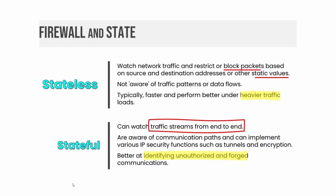Stateless firewalls watch network traffic and restrict or block packets based on source and destination addresses or other static values. They are not aware of traffic patterns or data flows, but typically are faster and perform better under heavier traffic loads. Stateful firewalls can watch traffic streams from end to end. They are aware of communication paths and can implement various IP security functions such as tunnels and encryption, and are better at identifying unauthorized or forged communications.